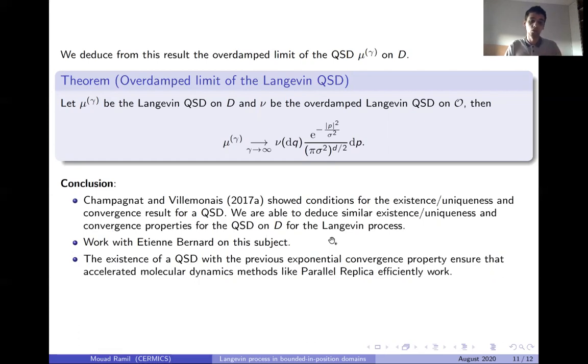I also worked with Etienne Bernard on the subject to find alternative ways to prove these results. Now that we have a quasi-stationary distribution for the Langevin process, we know that parallel replica, like other accelerated molecular dynamics methods, are efficiently working when we consider Langevin dynamics, which was not the case.